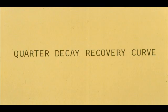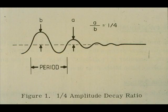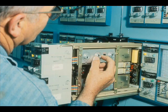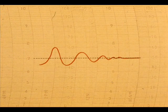A quarter decay recovery curve is generally considered to be the optimum. Quarter decay means the magnitude of each cycle after the first one is one-fourth as large as the preceding one. Our goal will be to tune the controller to get this response from the process.